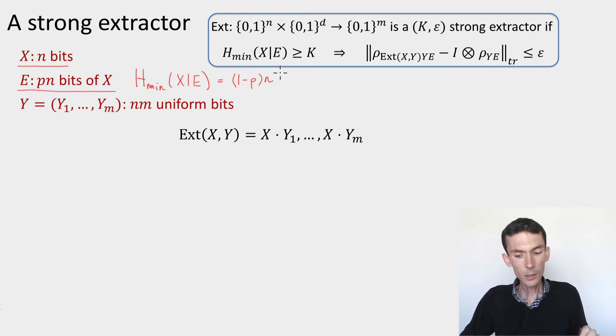Our goal is to come up with a procedure that extracts as many as possible of these bits. We're going to manage to extract essentially all of them. I recalled the definition of a strong seeded extractor over there on the top right, and we'll use the same construction as before. The seed is going to be pretty long. It's going to have seed length d, which is n times m, where m is our target output length.